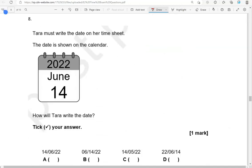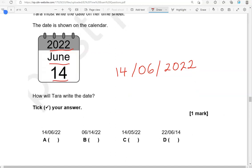Tara must write the date on her timesheet. The date is shown on the calendar. 14th of June 2022. How will Tara write the date? Tick your answer. June is the 6th month of the year. So, we're going to write this as 14, 06, 2022. So, where do we have a match? That's the first one. Because we can write 2022 as just 22 as well. The short form of it.